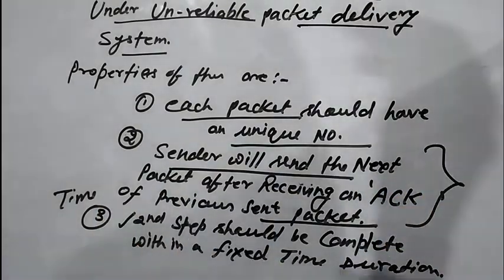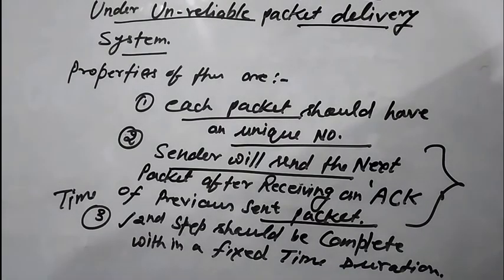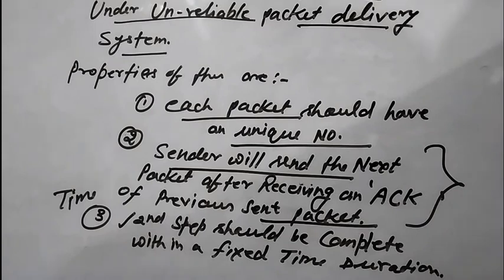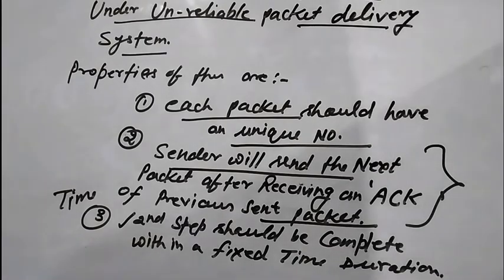The third property says the acknowledgement should be received within a fixed time duration — suppose 0.1 seconds. If the acknowledgement is not received within that time, the sender understands the packet was lost and resends the same packet. This property makes Stop-and-Wait provide reliable delivery.